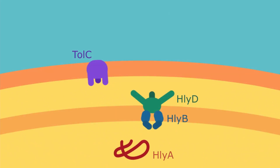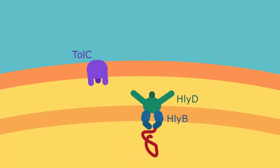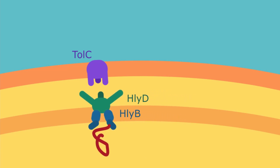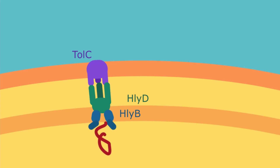The bacteria secretes hemolysin A by binding to the hemolysin B complex, causing a conformational change in the hemolysin B and D complex that causes it to bind to the TolC protein, thereby creating a channel through which hemolysin A can travel.